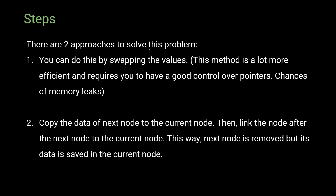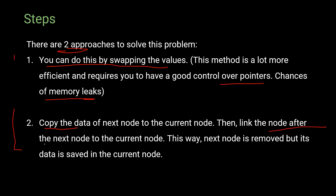There are basically two approaches to solve this problem. The first is by swapping the values using pointers, which requires good control over pointers but has some chances of memory leaks. The second approach is: first, copy the data from the next node to the current node; then link the node after the next node to the current node; and then remove the next node — but its data is saved in the current node.